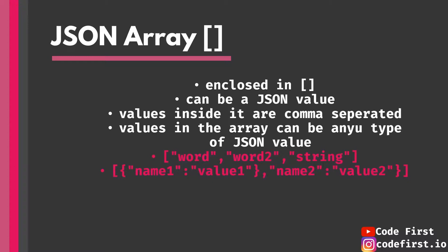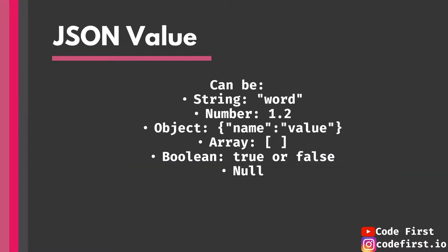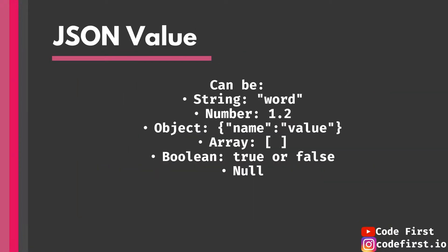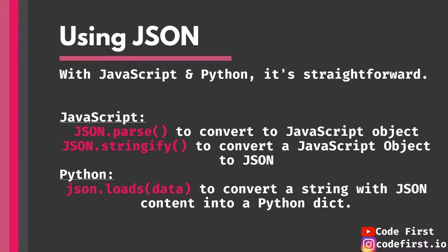A JSON array is enclosed in square brackets and can act as a JSON value for a certain key. Items inside the array can be any type of JSON value — strings, objects, more arrays — it depends. For example, 'GML' and 'XML' are strings inside an array which is the value for a key. You can go super nested with JSON, as you can see from all the braces in this example.